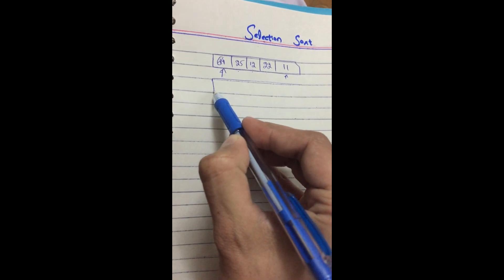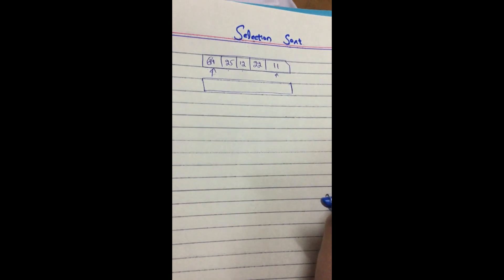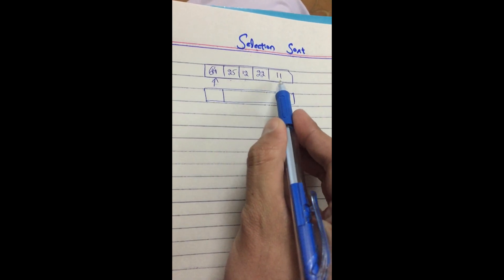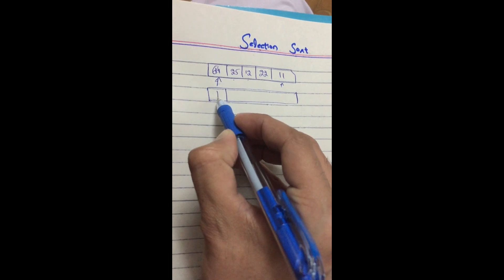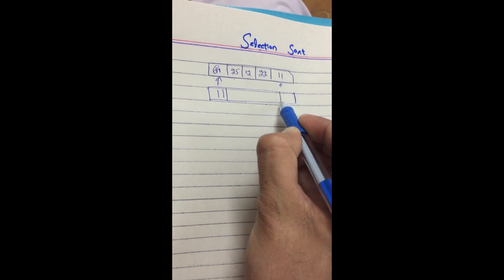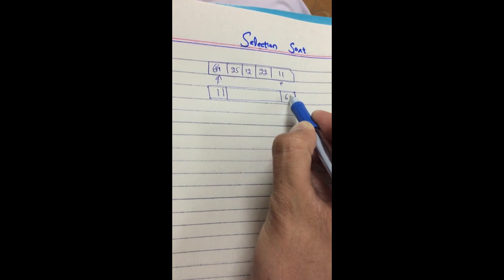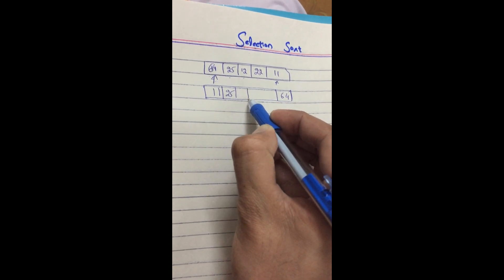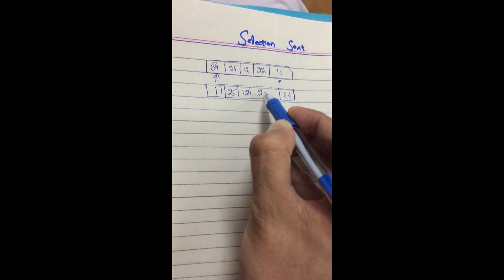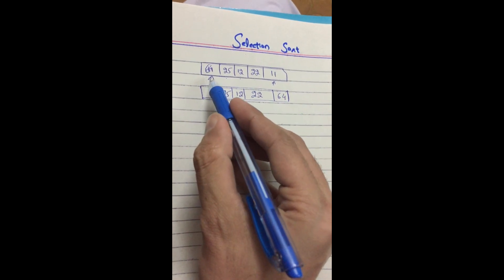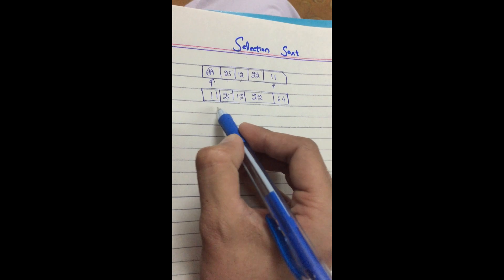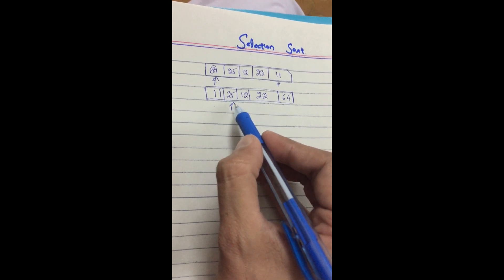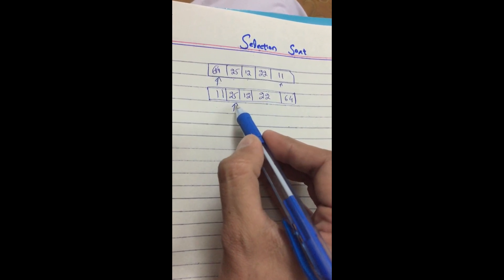So we draw the array and swap 64 with the minimum value, which is 11. Now 11 is at the front and 64 moves to where 11 was; all other elements stay in place. Our counter now moves to the second element.